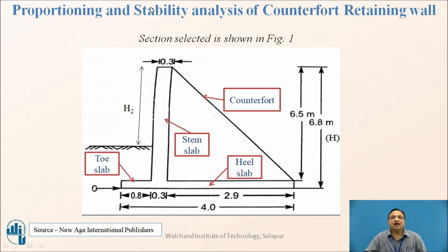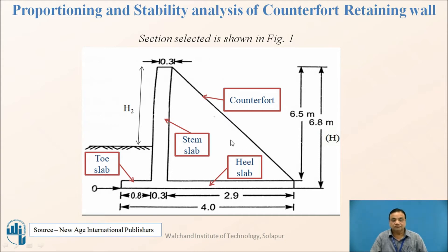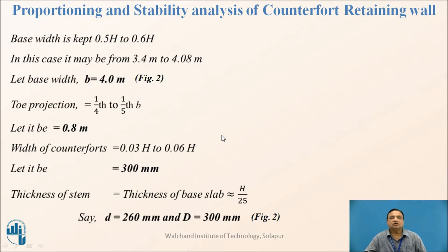The counterfoot retaining wall consists of the stem slab, toe slab, heel slab, and counterforts placed 3 meters apart. Let us now discuss the proportioning of these components.